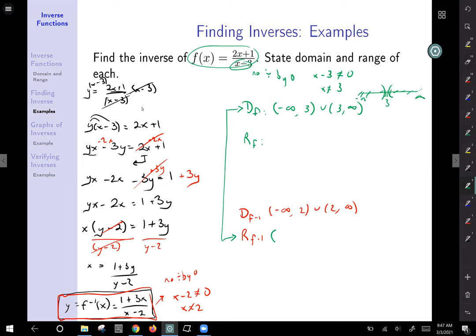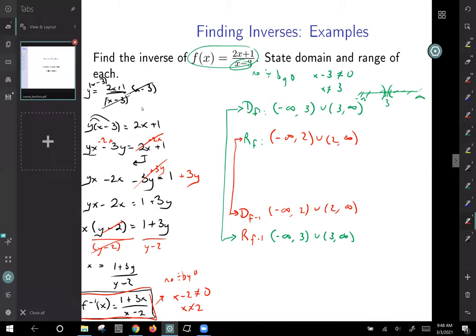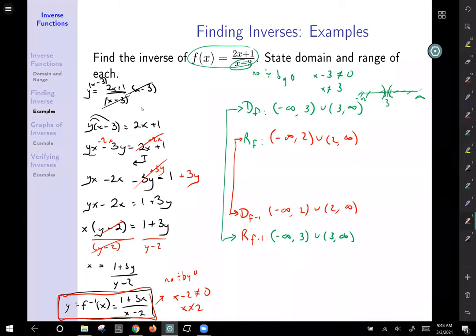So the range for my inverse is going to be the domain of my original function, negative infinity to 3, union with 3 to infinity. And similarly, the domain of the reversing function is the outputs of the original function. So the range of f is going to be negative infinity to 2, union with 2 to positive infinity.